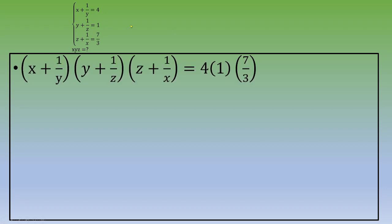So let's multiply these three elements on the left side. x plus 1 over y times y plus 1 over z times z plus 1 over x equals, and you multiply these three elements: 4 times 1 times 7 thirds.